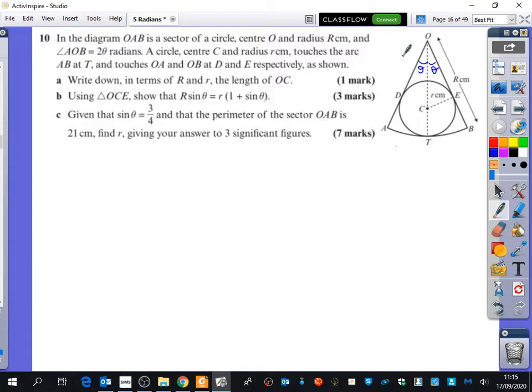So first of all, write down in terms of R and r the length of OC. So we want to just find out the length from here to here. Anyone think they can spot about how you would find out what that length OC is? Yes, Zahir. It's capital R minus little r, because this distance here is little r, and this whole distance is... silly me, silly me. I've labelled the wrong section.